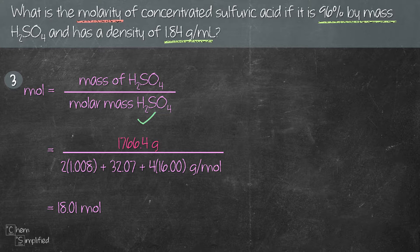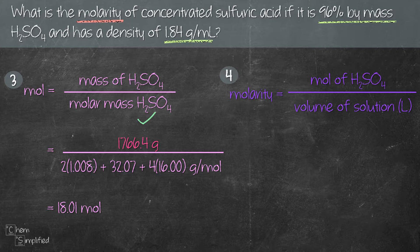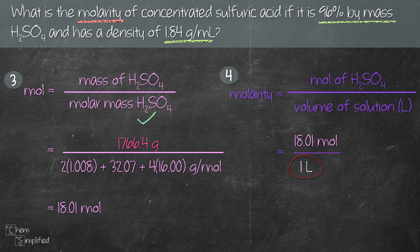Using these moles, we plug into the molarity formula, giving us 18.01 divided by 1 liter — the same assumed volume we used earlier. If you made a different assumption for the volume earlier, make sure you use that same value here. Calculating this gives us 18.01 molar. Presenting the answer in the correct significant figures, the molarity is 18 molar.